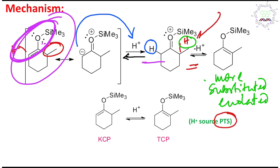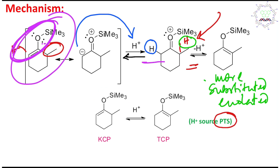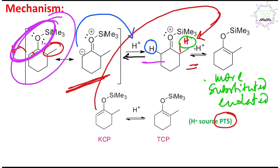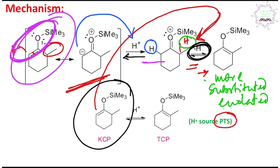Now, who is acting as a base to abstract this proton? Remember: this molecule can act as a base. Just a moment ago I showed that this negative charge is abstracting a proton and producing this species. In the second phase, another molecule remaining in the reaction medium — this molecule or the KCP — can abstract the proton and produce the product. In this way, the reaction will continue, because in the second step, a proton is regenerated. So this proton will again protonate another KCP. This is called the KCP, and this other one is the TCP.